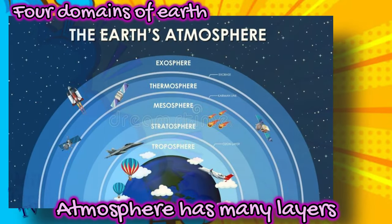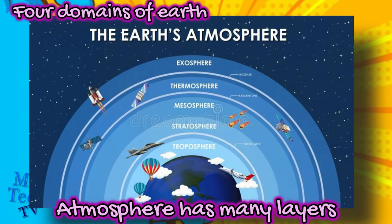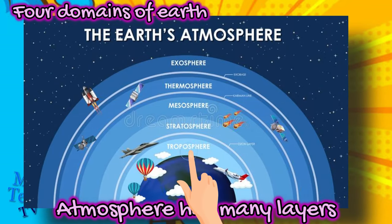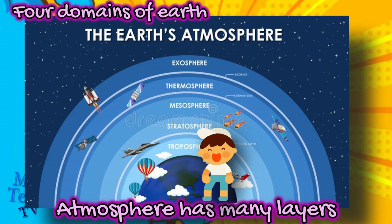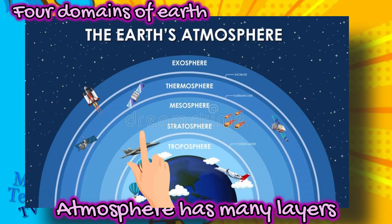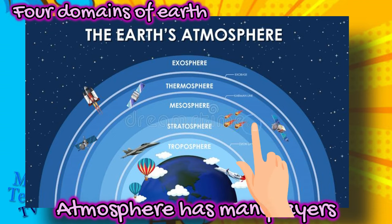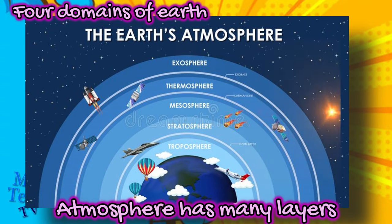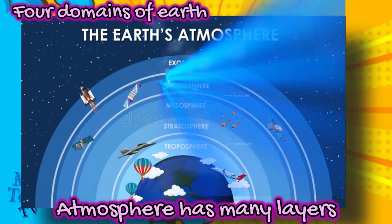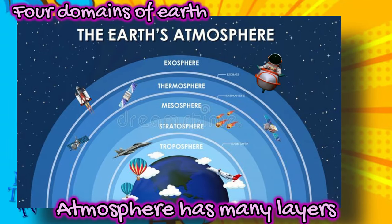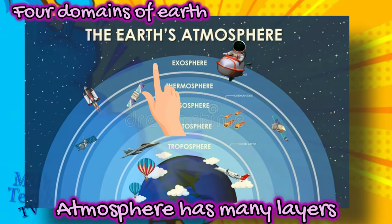The atmosphere also has several layers. The troposphere is the lowest layer, starting from ground level and extending up to 10 kilometers — we humans live in this layer. Next comes the stratosphere, where the ozone layer is found, absorbing high-energy ultraviolet light from the sun. Then comes the mesosphere, where most meteors burn up. The thermosphere absorbs high-energy X-rays and UV radiation from the sun. Lastly, the exosphere is the outermost layer of the atmosphere.